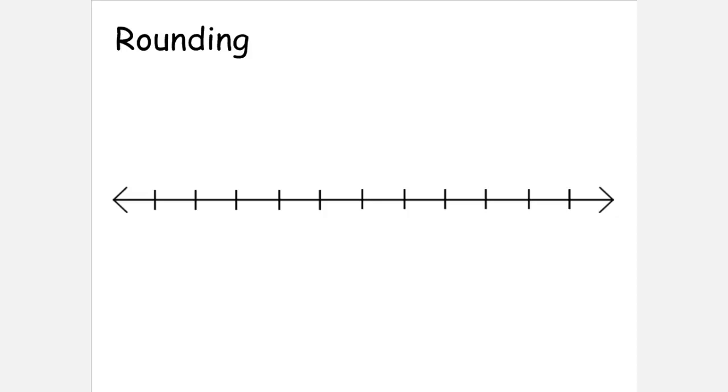Rounding is the first estimation strategy that we're going to talk about today, and it's a good all-purpose estimation strategy. If you don't learn any other ones, rounding is the way to go. Rounding basically means that we're going to take a number and we're going to remove some of the detail from that number. So we're going to take some of the place values and make them zero.